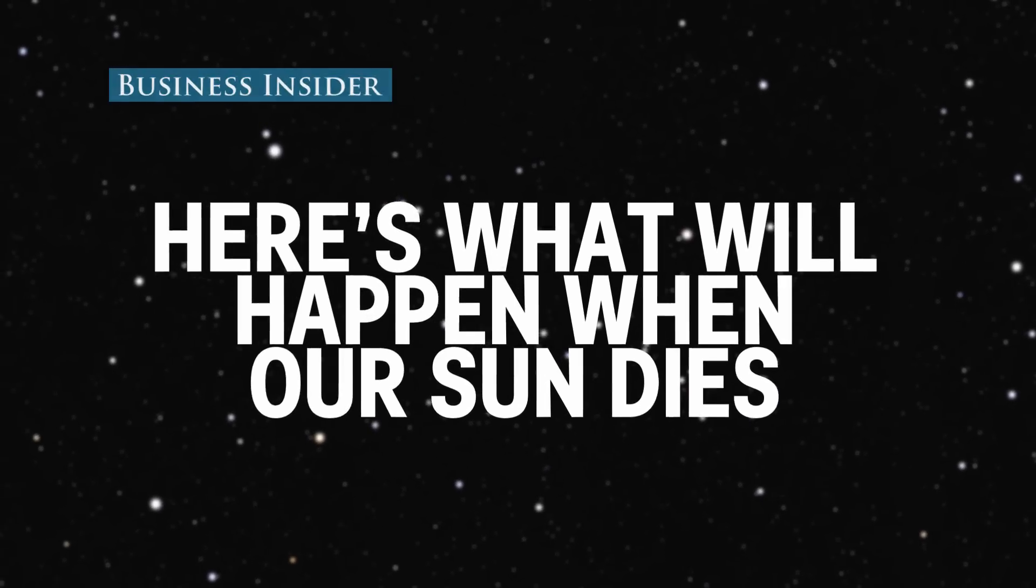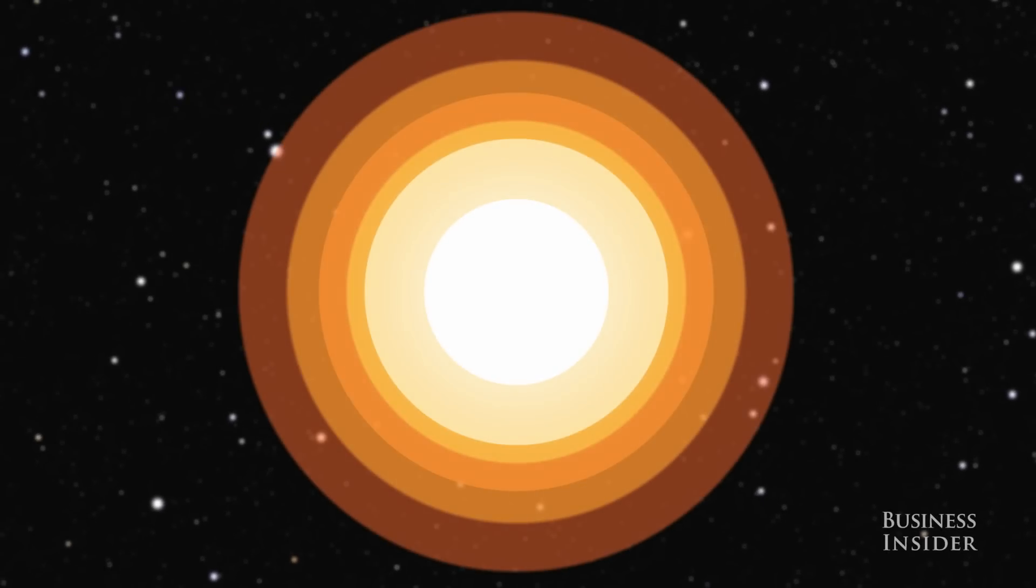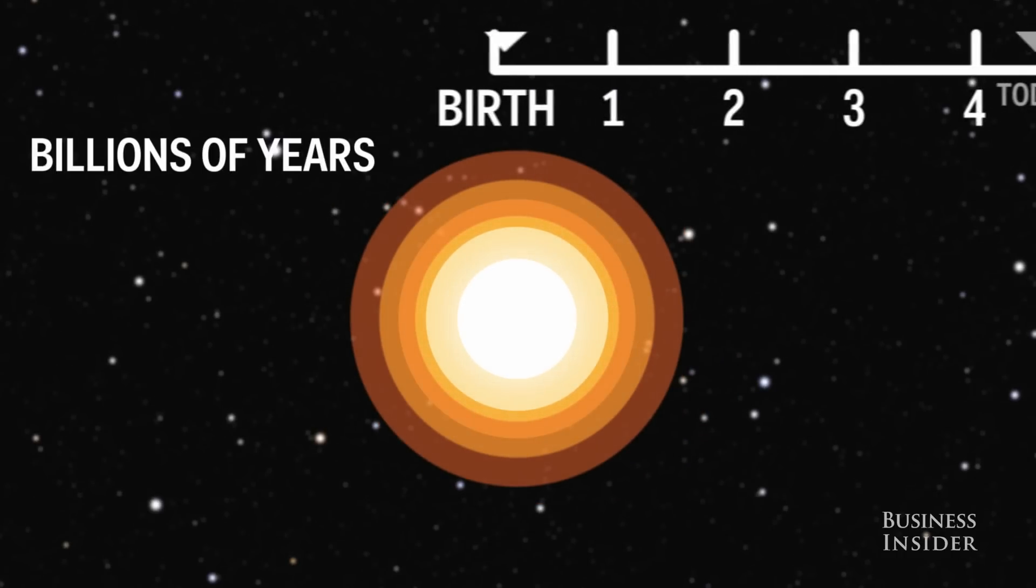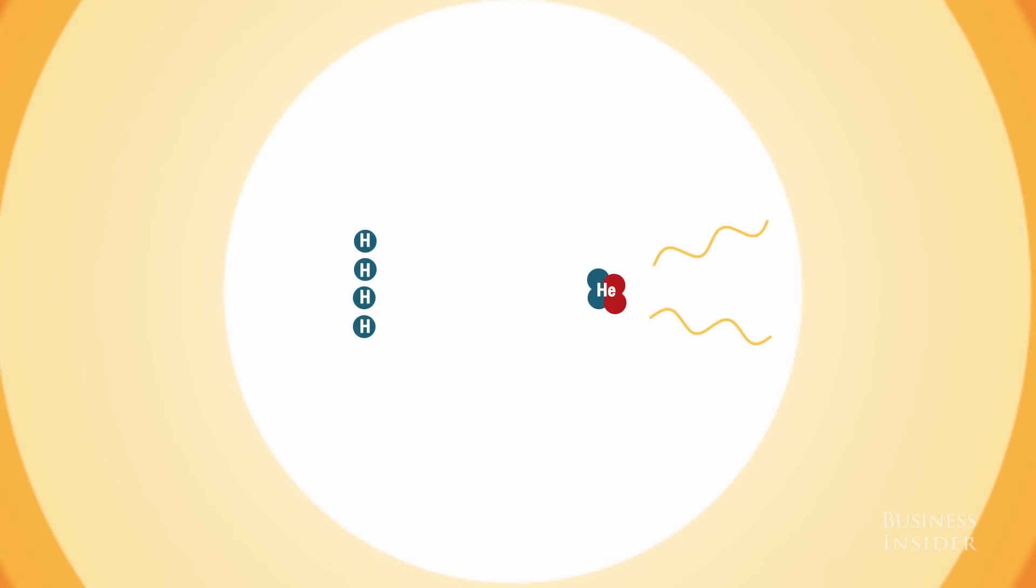Like all stars in the universe, the Sun is not immortal. The Sun was born 4.57 billion years ago. It survives by burning 600 million tons of hydrogen atoms into helium atoms in its core every second.